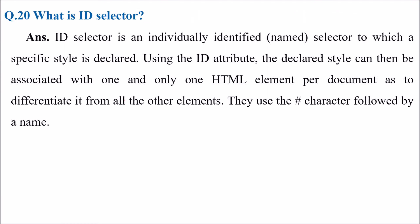What is id selector? Id selector is an individually identified name selector to which a specific style is declared. Using the id attribute, the declared style can be associated with only one HTML element per document. In CSS we use a hash character followed by the name.